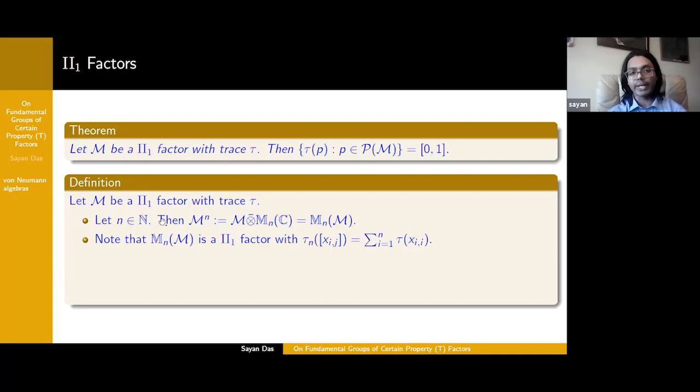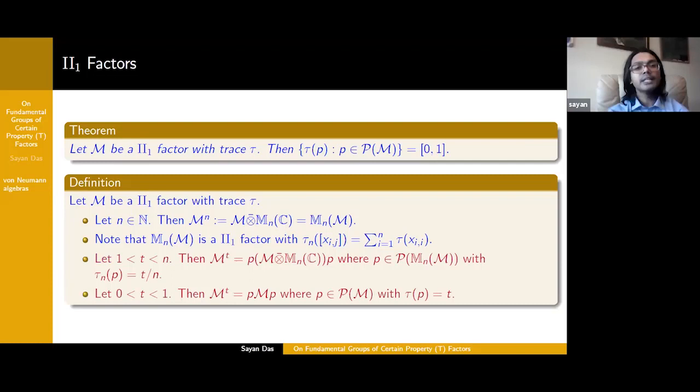What von Neumann wanted to do, using this fact, is construct T by T matrices over a given II_1 factor M, where T could be any positive real number. If you start with some natural number N, then N by N matrices over a von Neumann algebra is obtained simply by taking the tensor product with N by N matrices, and this is again a II_1 factor. For a real number that's not an integer, you can do basically the same procedure where you would do a cut down of this tensor product. This amplification or compression should be thought of as T by T matrices. One of the key reasons von Neumann wanted to do that is that now if you start with any II_1 factor, you get all of these continuously many different new examples of type II_1 factors.